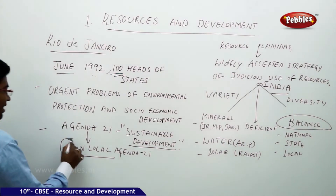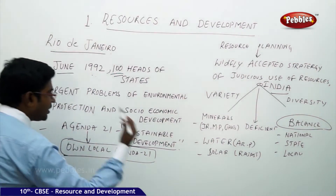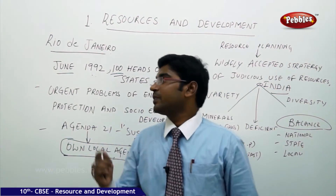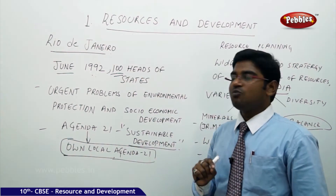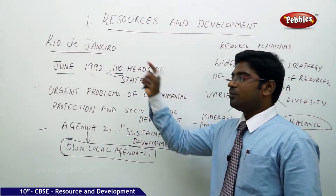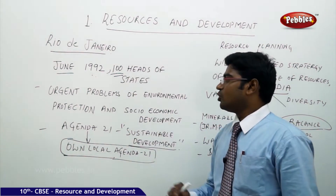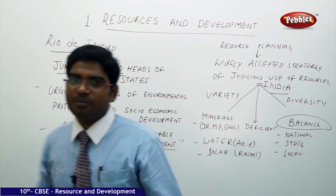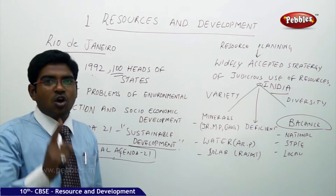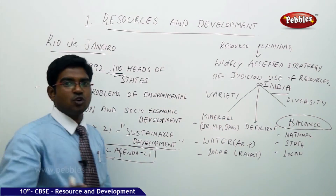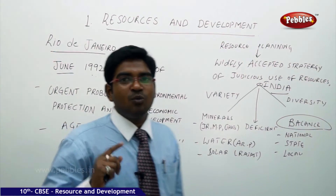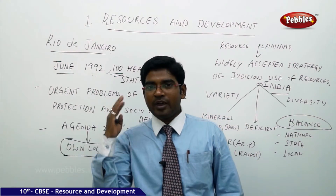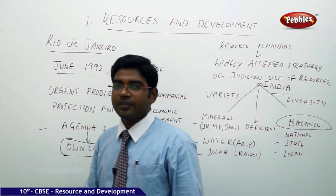Every nation should have its own agenda under Agenda 21. That is the main theme of the Rio de Janeiro summit held in Brazil in 1992, where the main agenda was sustainable development — do not harm the future resources which belong to future generations, where they have to receive their natural share.